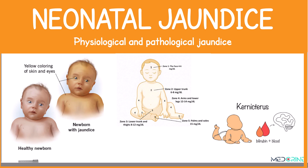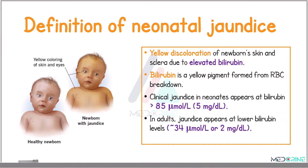Today we shall be looking at neonatal jaundice, with a specific focus on physiological and pathological jaundice. Neonatal jaundice is a yellow discoloration of the newborn's skin and sclera that occurs due to elevated bilirubin. Bilirubin is a yellow pigment formed from red blood cell breakdown, and clinical jaundice in neonates appears at bilirubin levels of more than 5 mg/dL or more than 85 micromoles per liter.